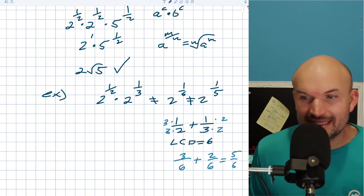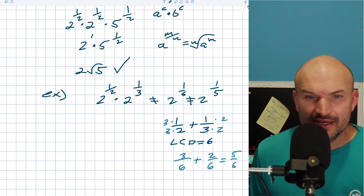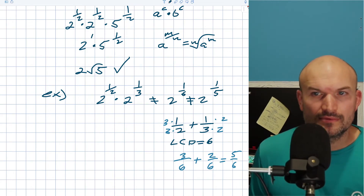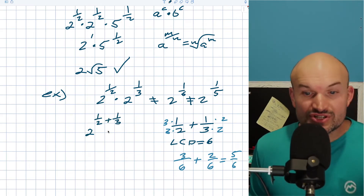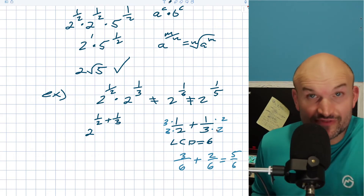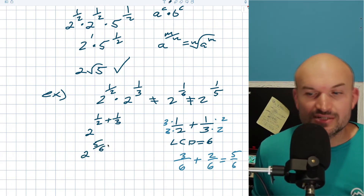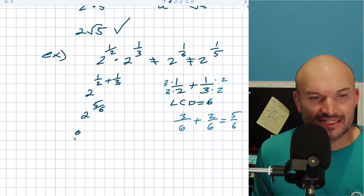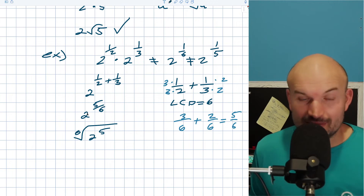So when I actually multiply these out, I have 2 to the 1 half plus 1 third, which I just figured out is 5 over 6. So the result is 2 to the 5 over 6, and if I wanted to write this as a radical, I could write this as the sixth root of 2 to the fifth power.